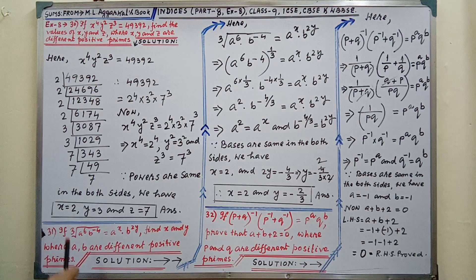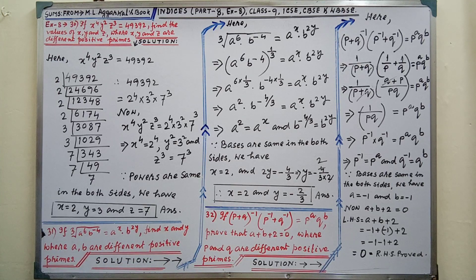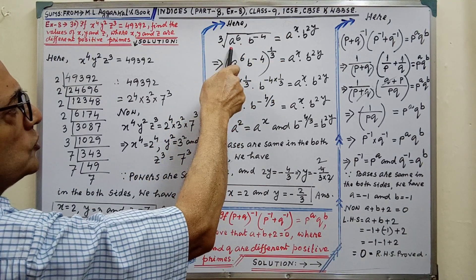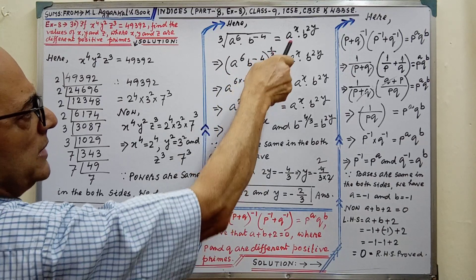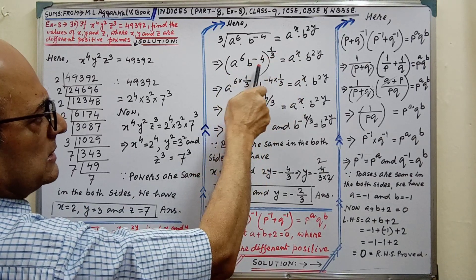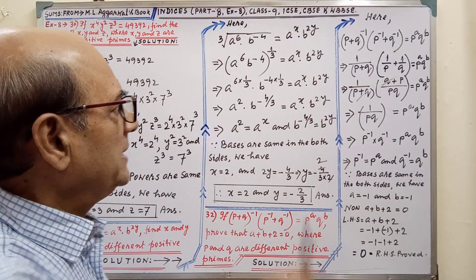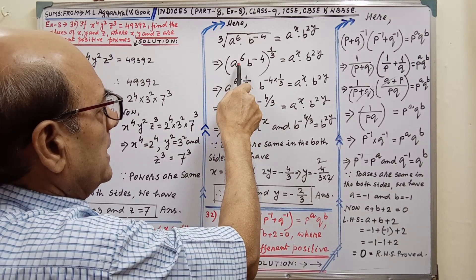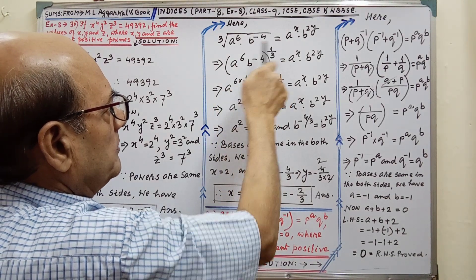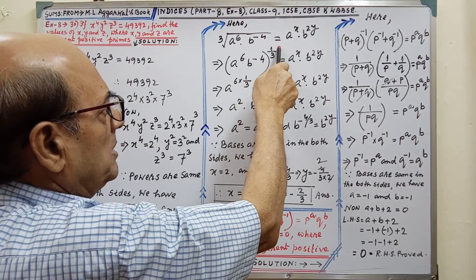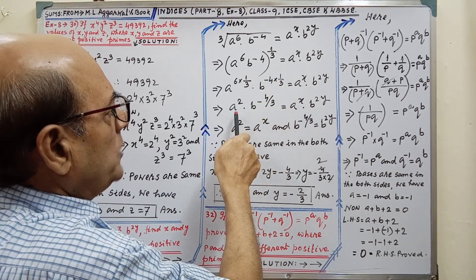Next sum. If this equals this, find x and y where a and b are different positive prime solutions. Here, this is given clearly. We have to simplify. This is the root, so this whole is to the power 1 by 3 and this will remain as it is. By the law (a/b)^m = a^m × b^m, this a to the power 6 will have its power multiplied by 1 by 3, and here this power will also be multiplied by 1 by 3.